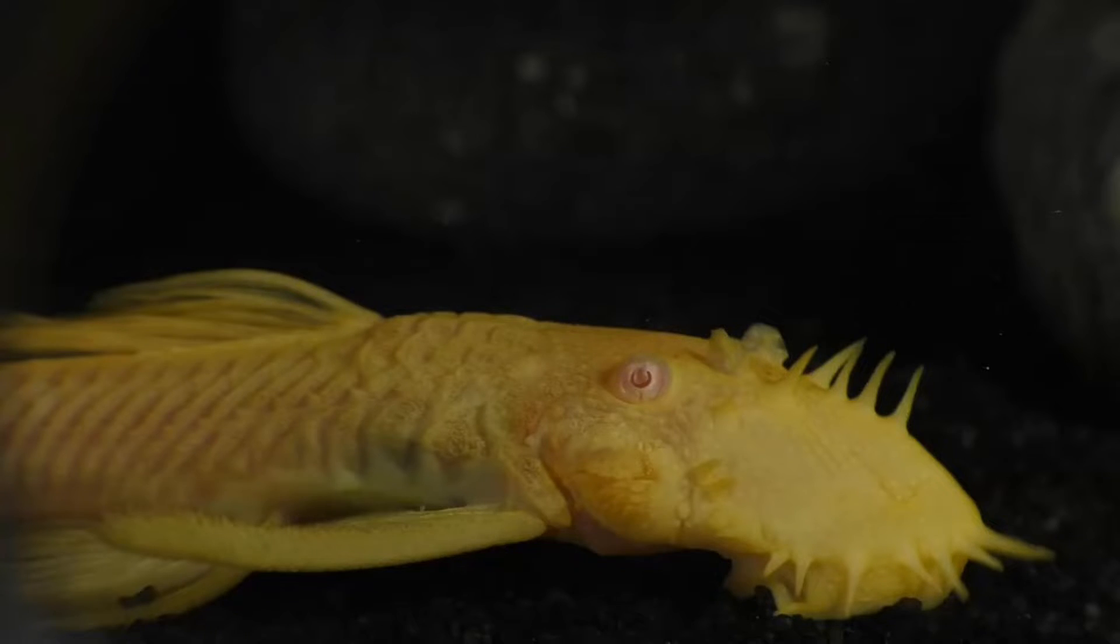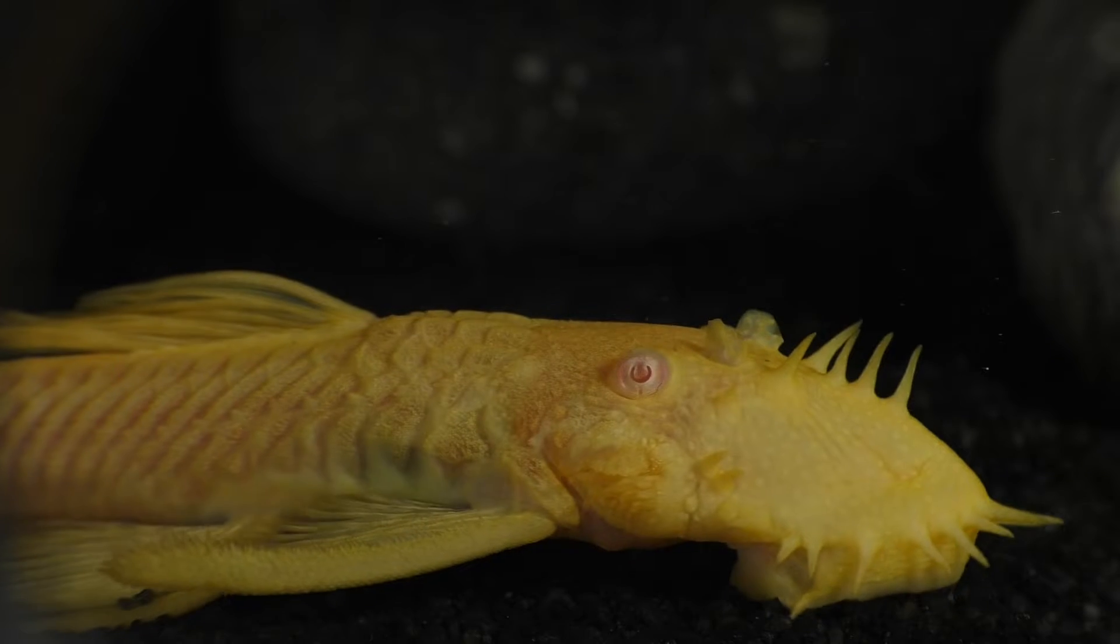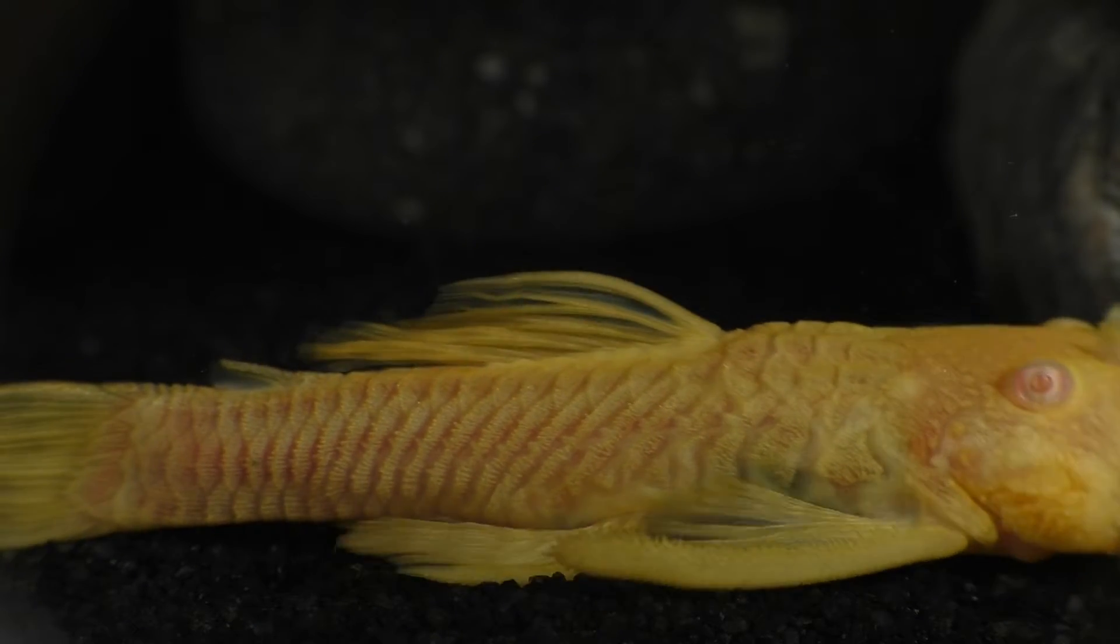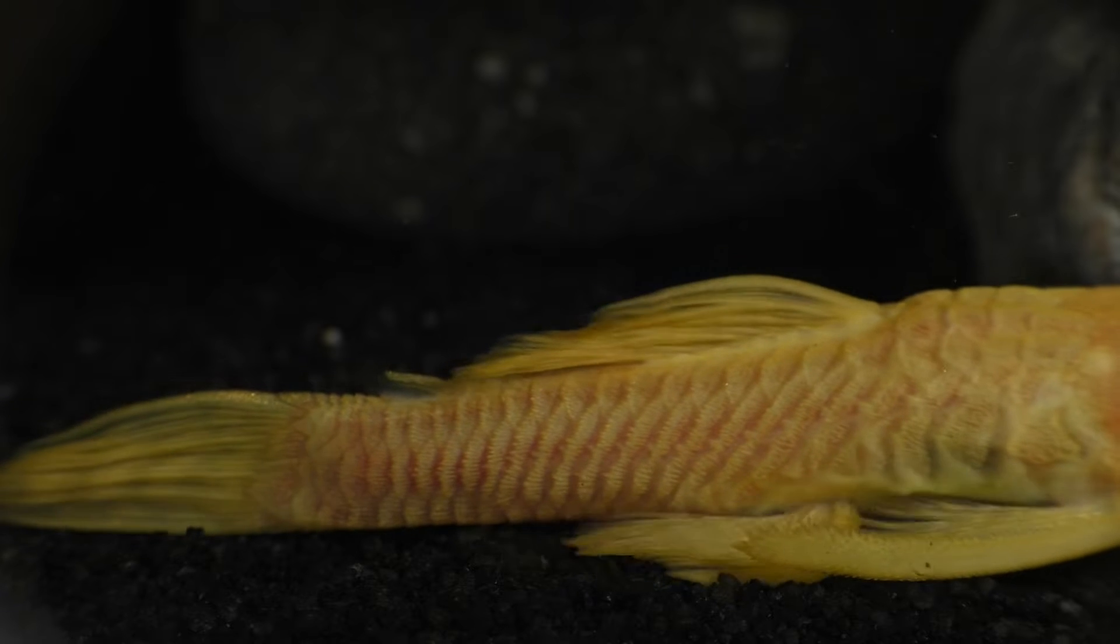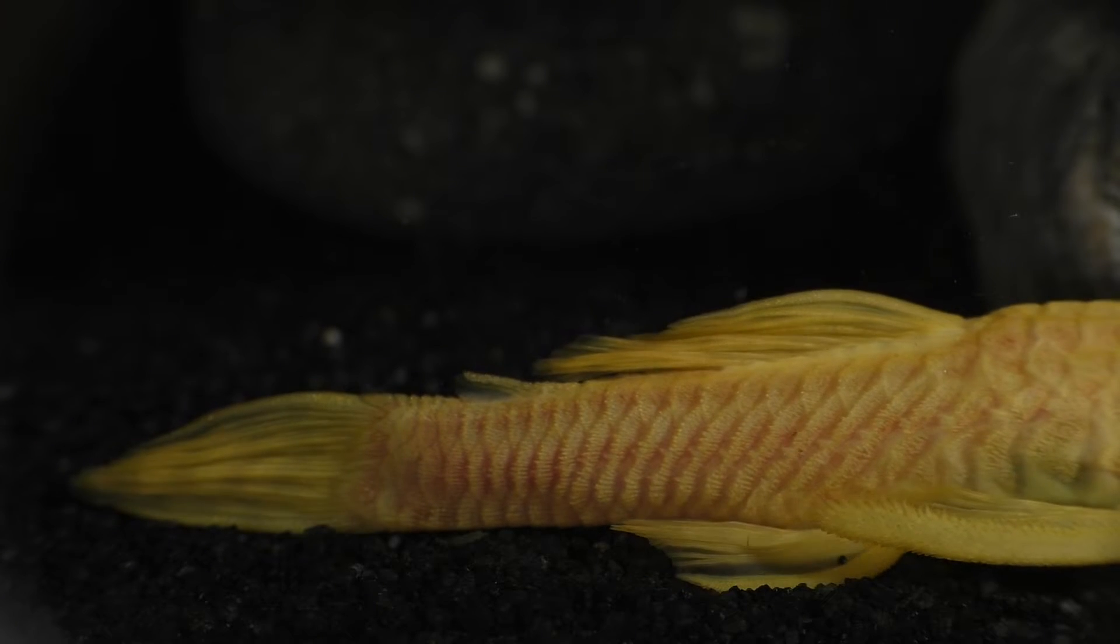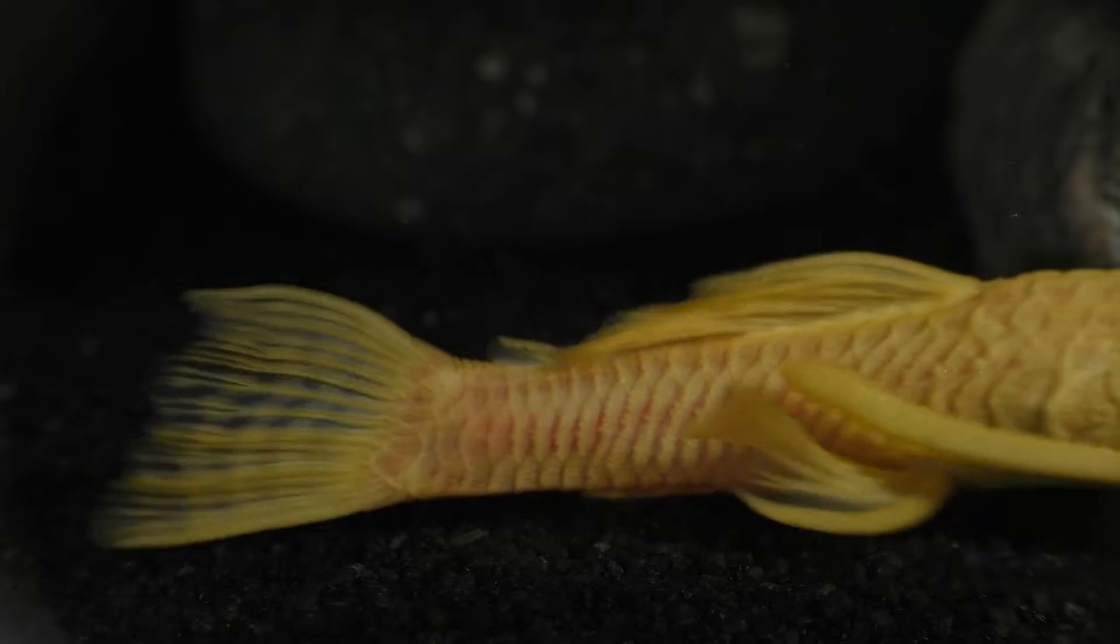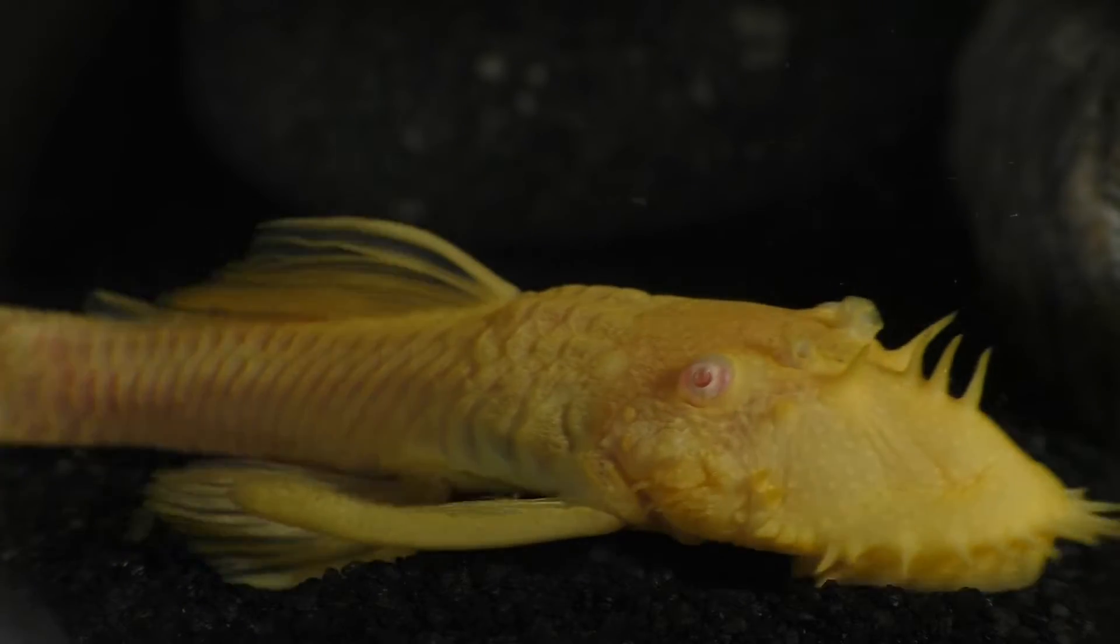In a few minutes we'll be looking at some juvenile bristlenose plecos climbing straight up the vertical rock face of a small waterfall. But first, let's look at an adult bristlenose using its ventral fins to move around on a sandy substrate. Be sure to notice how the bristlenose moves his ventral fins backwards and forwards as he moves across the sand, and this is the very same motion that will allow the bristlenose to climb up a waterfall.